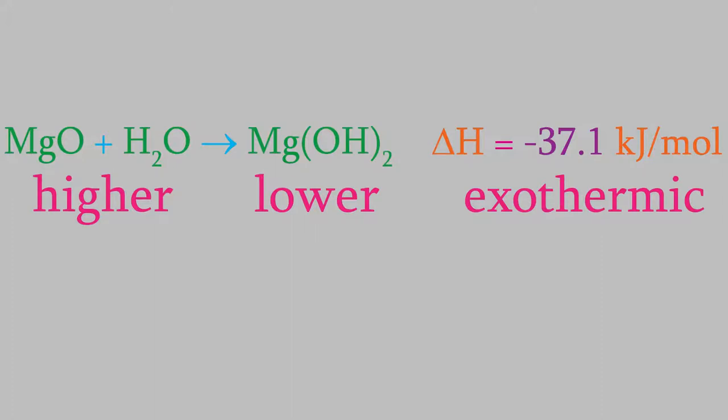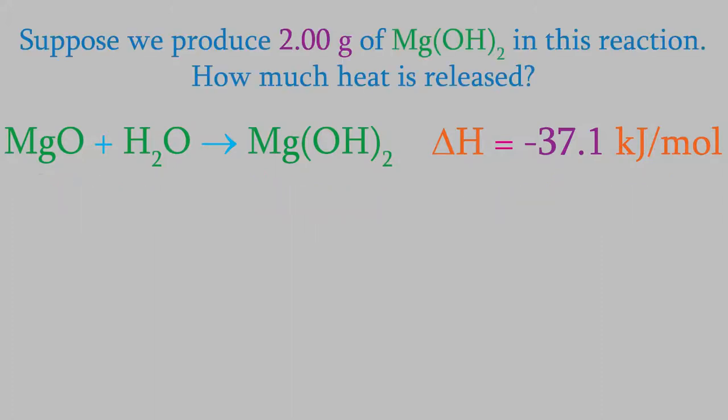Now what can we do with this information? Suppose we perform the reaction and get 2.00 grams of magnesium hydroxide as our product. How much heat would be released by the reaction?